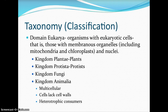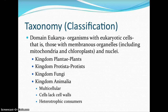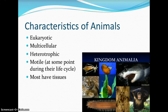In Kingdom Animalia, we are looking at multicellular organisms. Their cells lack cell walls, so we only have the cell membrane, and we are heterotrophic consumers, which means we have to ingest our food, digest our food, in order to obtain those organic compounds necessary to sustain life and keep our metabolic processes running. The steps are ingestion, digestion, and excretion.